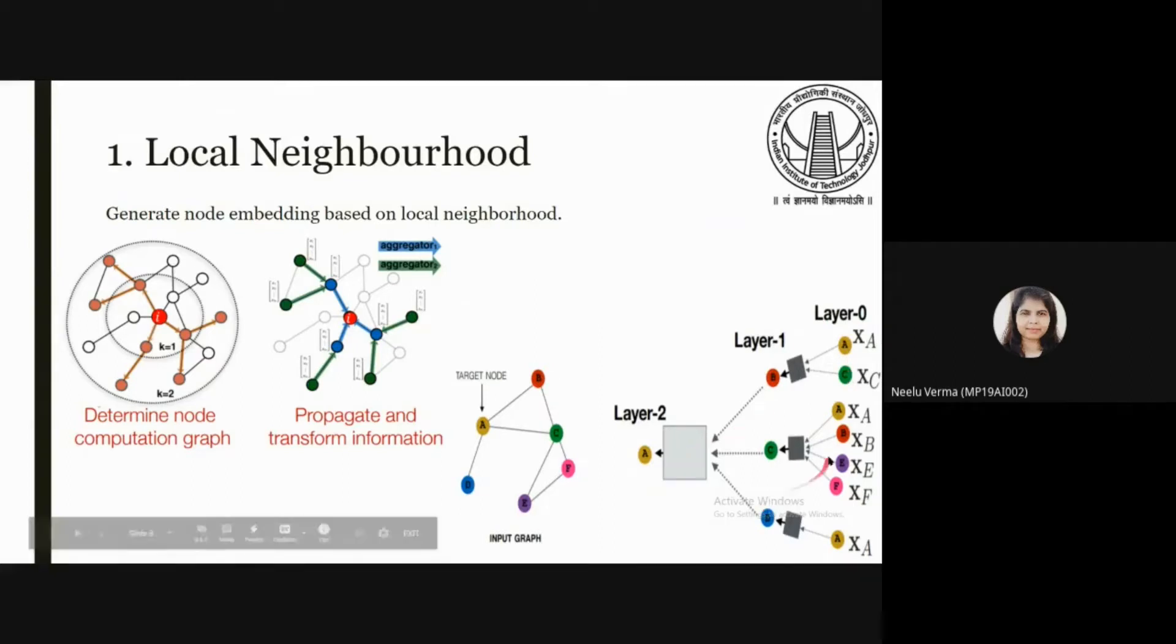The solution for locality is to generate node embedding based on local neighborhood using computational graph. In the diagram you can see A is connected with B, C, D. Then we look for neighbor of neighbor. In this way we get a two layer computational graph corresponding to A.